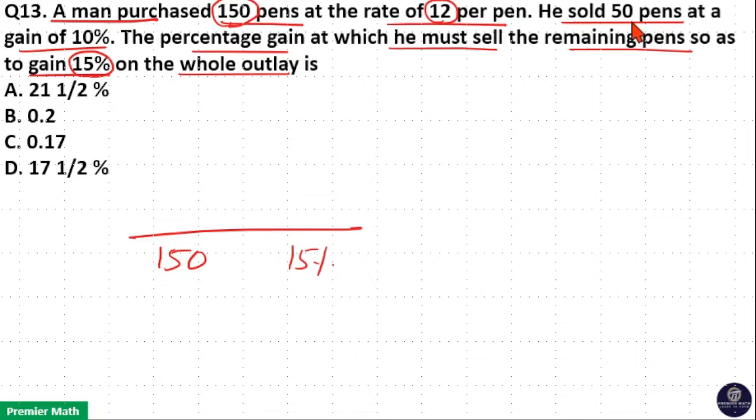Out of this 150, he already sold 50 pens at 10% profit. Now, the remaining are 100 pens. So, we should sell 100 pens at x percentage profit to get 15% total profit from this 150 pens.